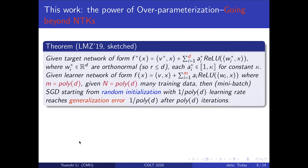Here is the primary result of our paper: we actually prove that over-parameterization helps. Given a learner network of size m much larger than necessary, given polynomially many training data points, stochastic gradient descent starting from random initialization with a small learning rate actually reaches a good generalization error efficiently.